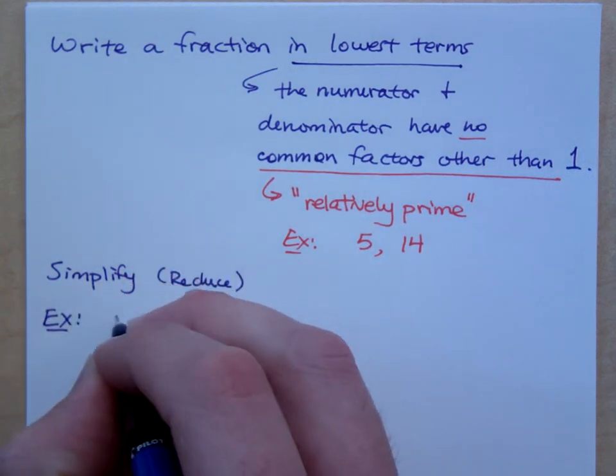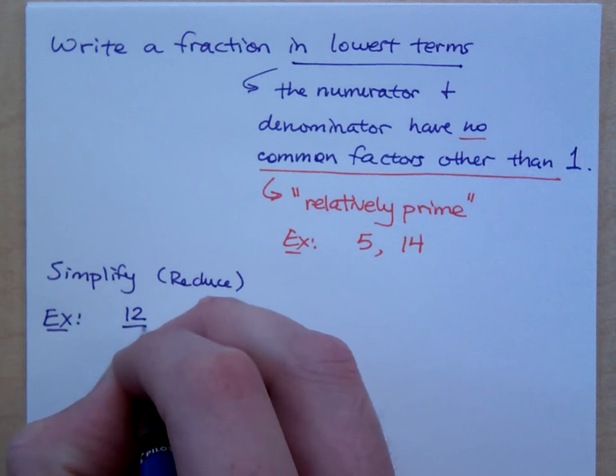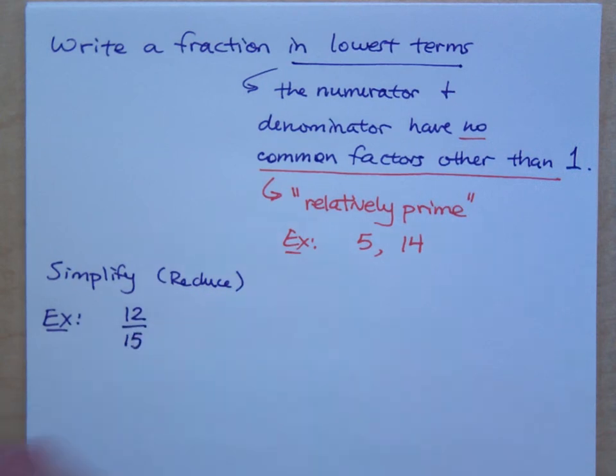For example, if I were to give you the fraction 12/15, 12 over 15 is not in lowest terms because 12 and 15 have a common factor. There is a number that will go into both 12 and 15. What is it? 3.